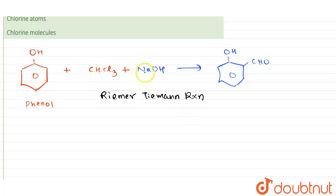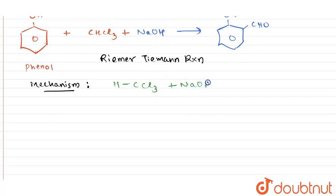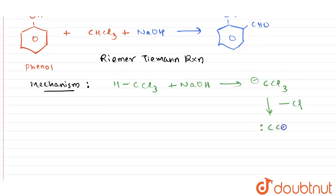In the Reimer-Tiemann reaction, the first intermediate formed involves chloroform reacting with sodium hydroxide. NaOH removes a proton from CHCl3, forming the carbanion CCl3⁻. Then one chlorine atom is lost from CCl3⁻, generating CCl2 — dichlorocarbene — as the key intermediate.